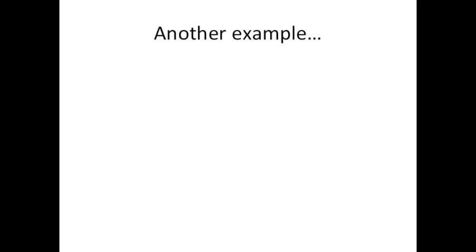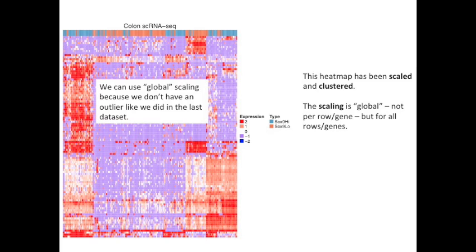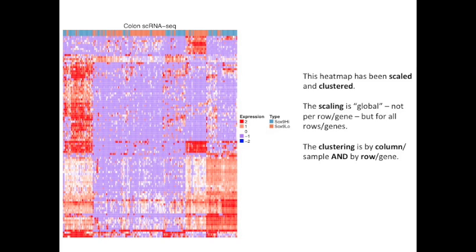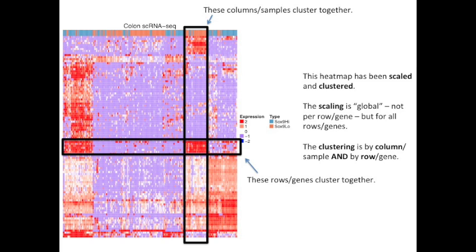Now let's look at another, slightly more complicated heat map. Like the heat map before, this heat map has been scaled and clustered. However, the scaling is global, not per row or gene, but for all rows and genes. We can use global scaling because we don't have an outlier like we did in the last data set. The clustering in this heat map is done for both the columns and the rows.